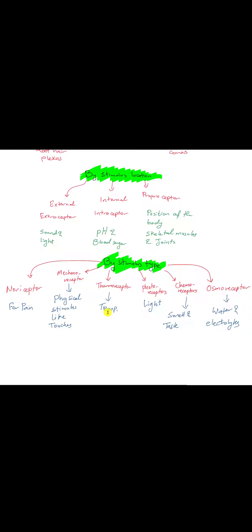There are thermoreceptors, those for temperature, photoreceptors for light, chemoreceptors for smell and taste, and then there are the osmoreceptors, those are for the water and electrolytes.